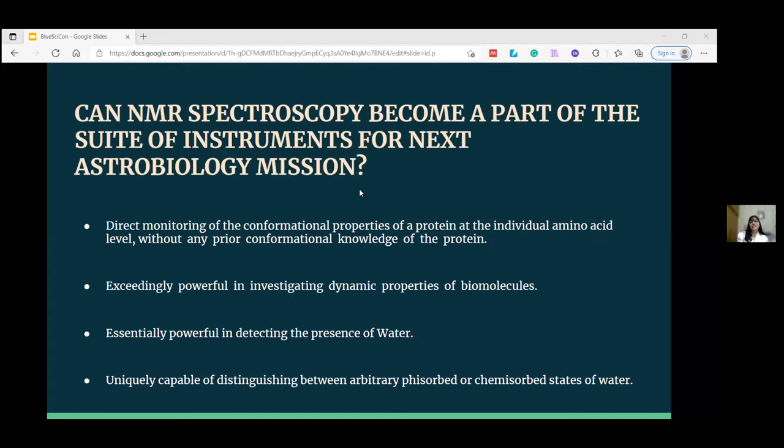Compared with X-ray crystallography, NMR spectroscopy - nuclear magnetic resonance - has unique features. From the structural biology viewpoint, it is the only method which directly monitors the conformational properties of a protein or its complex at the individual amino acid level, and that too without any prior conformational knowledge of the protein.